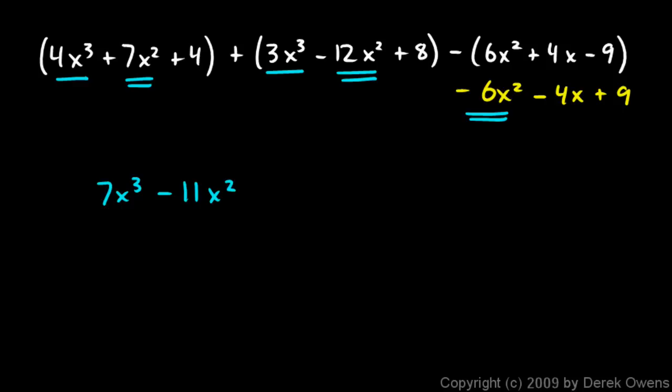And then let's see, do I have any x terms? I just have one. That's this -4x. And then my constant terms. I have this +4 and this +8. That gives me 12. And this +9 gives me +21. And that's my answer. 7x³ - 11x² - 4x + 21.